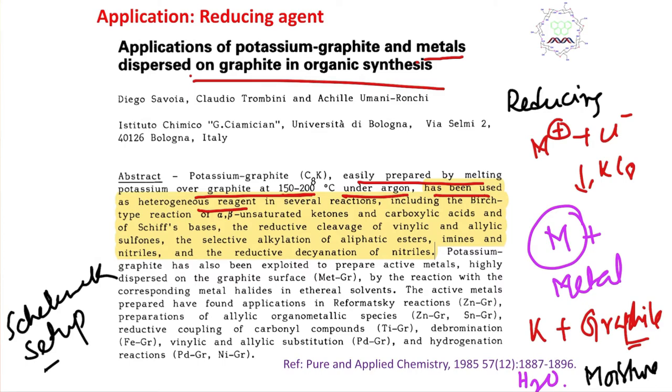Several reactions including Birch-type reduction of alpha beta unsaturated carbonyl compounds. In every case, it is a reducing agent. Reduction of vinylic and allylic sulfones, etc. This potassium graphite has also been exploited to prepare active metals highly dispersed on graphite surface.